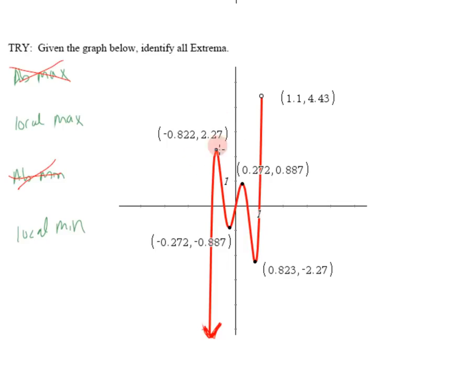Okay, what about locals? Yep, there are some of those. Let's start with local max, right there: 2.27. Another one: 0.887. And then minimums: negative 0.887, and negative 2.27. Right there. There they are. So there's two local max, two local mins, and no absolutes in either case. Hope that helps.